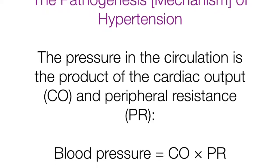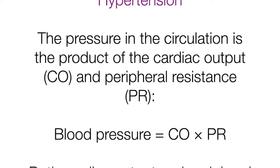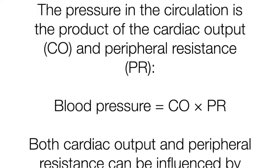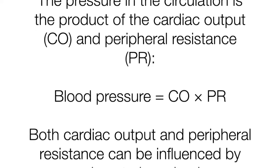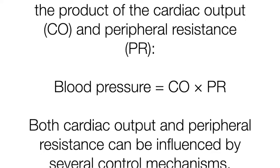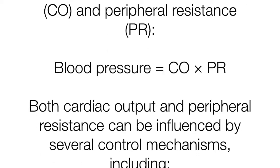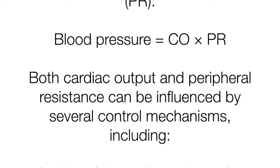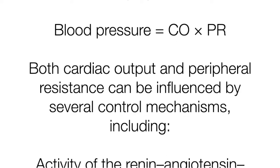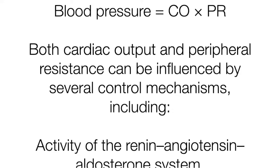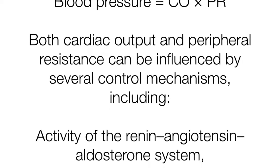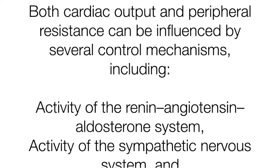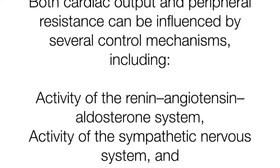Both cardiac output and peripheral resistance can be influenced by several control mechanisms, including the activity of the renin-angiotensin-aldosterone system, activity of the sympathetic nervous system, and other factors influencing salt and water in body fluids.